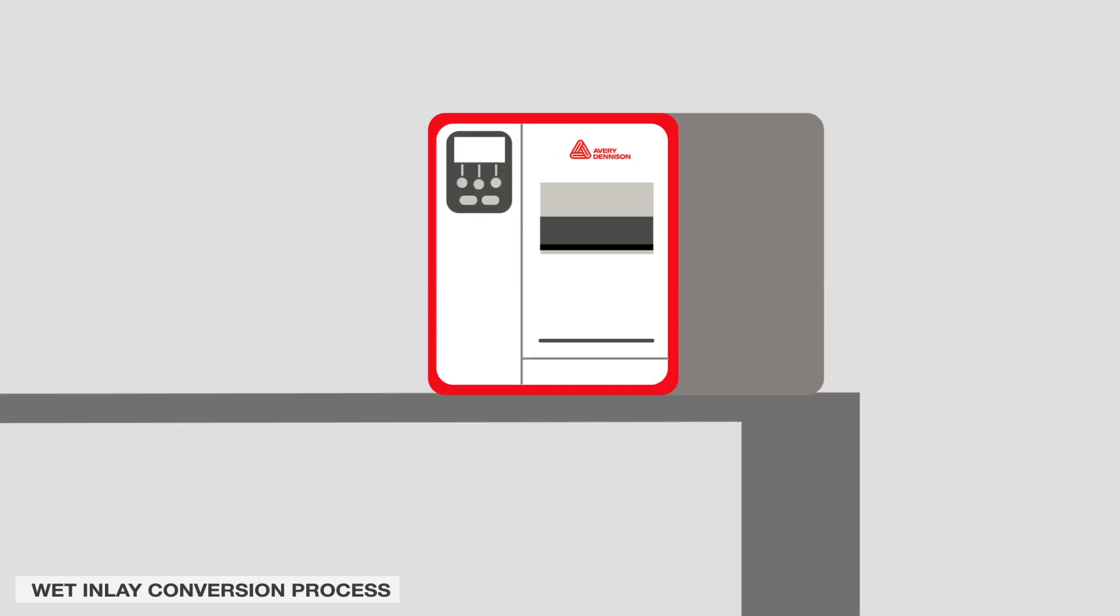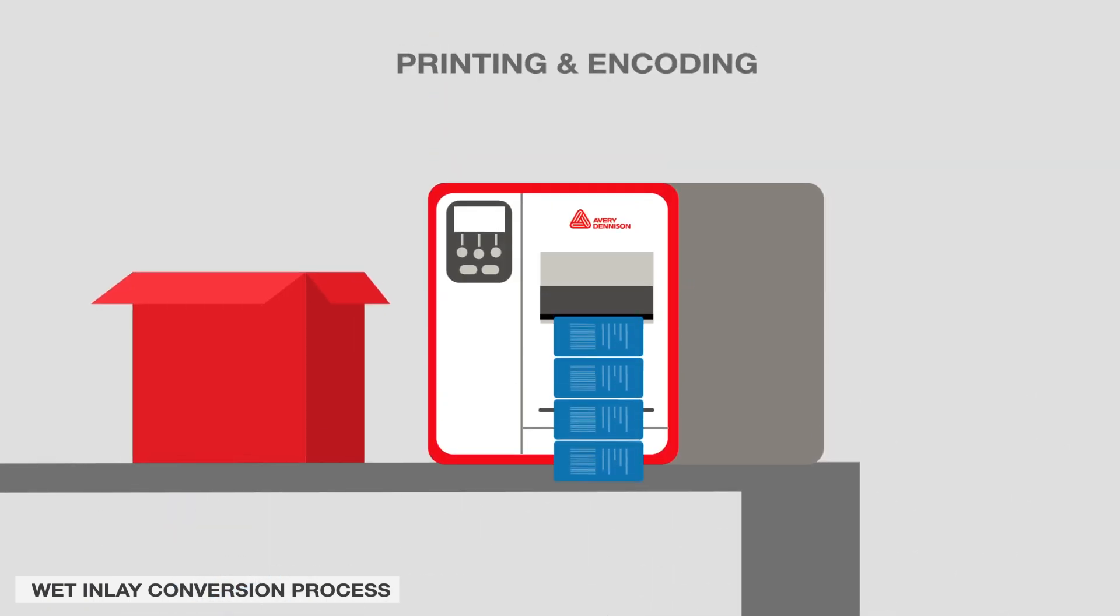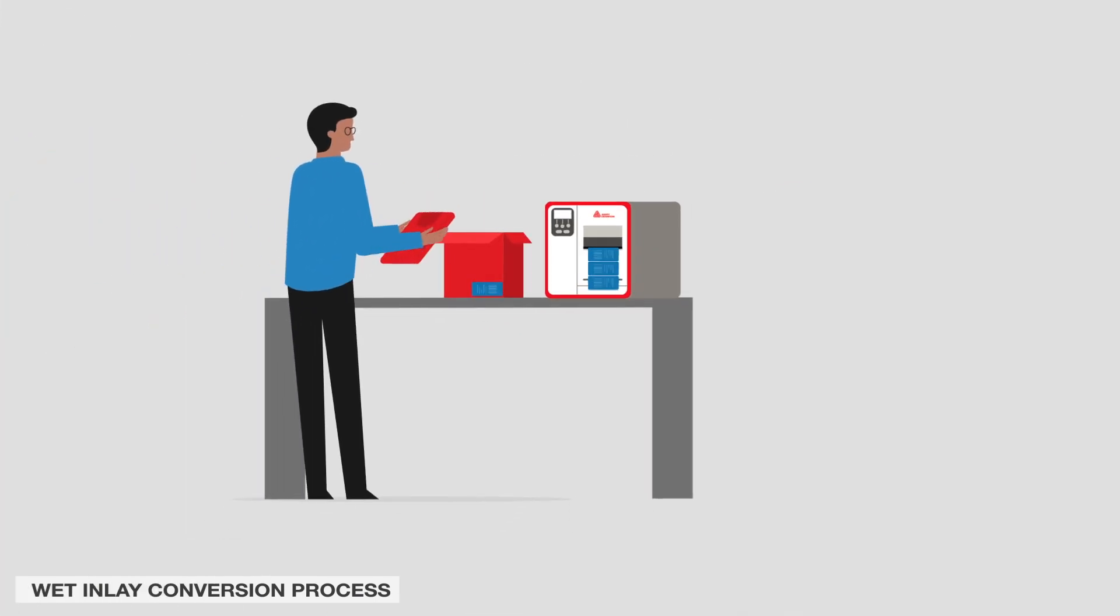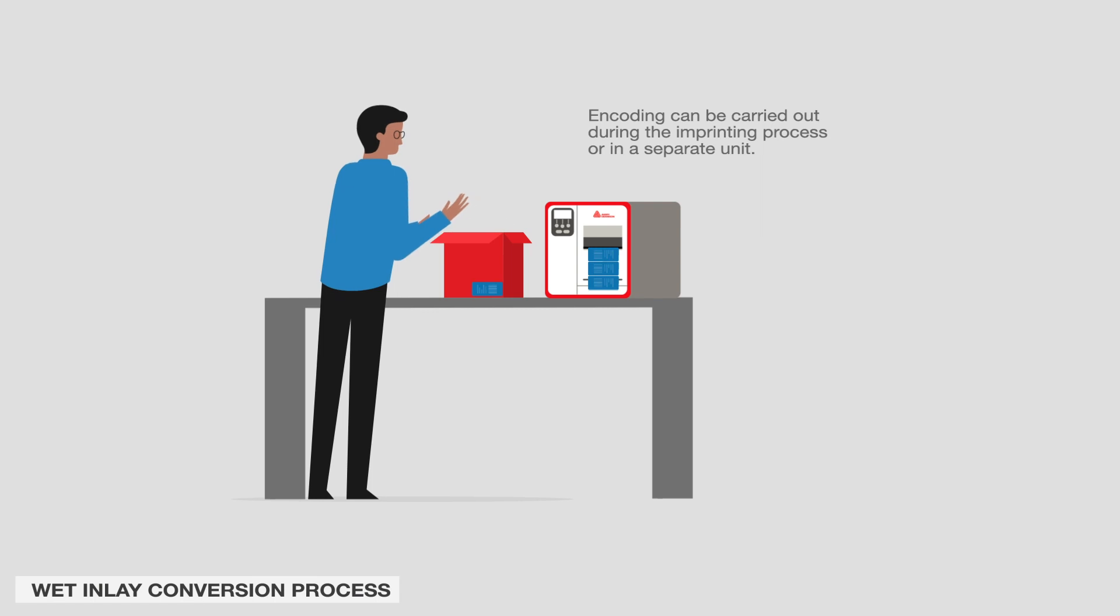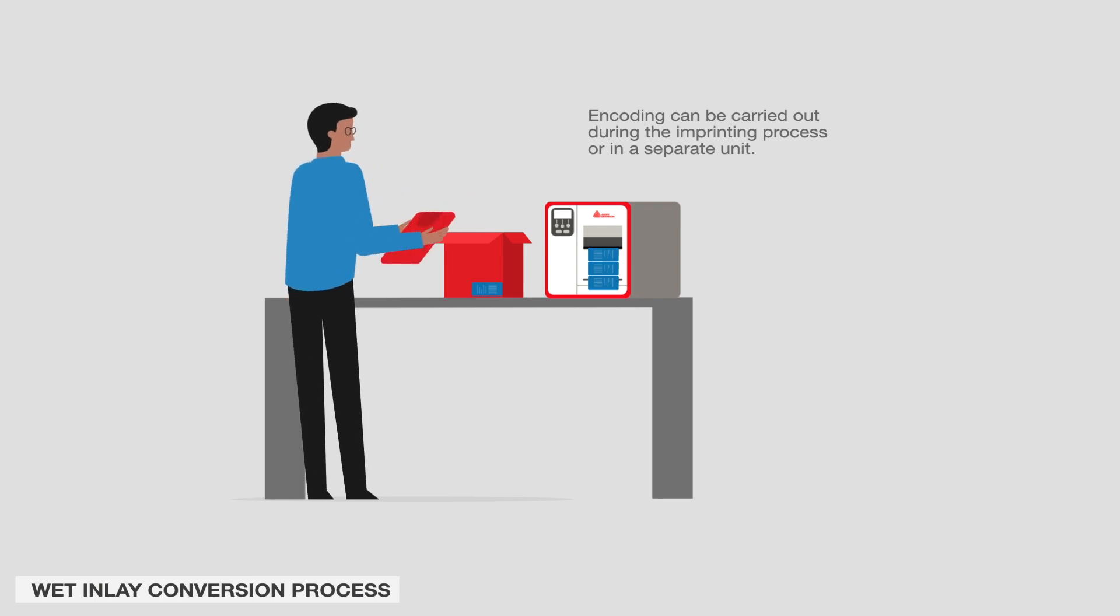The finished RFID label can then be programmed and encoded with the required information. Encoding can be carried out during the imprinting process or in a separate unit.